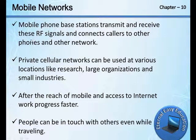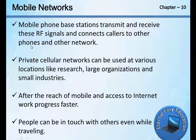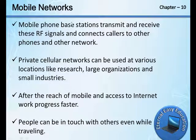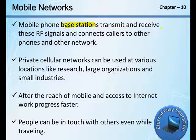The mobile phone base stations transmit and receive these radio frequency signals and connect callers to other phones and other networks. First, the content in the phone is converted into radio frequency signals by the mobile phone itself, then the signals are given to the base station, where they are transmitted and received through RF signals.